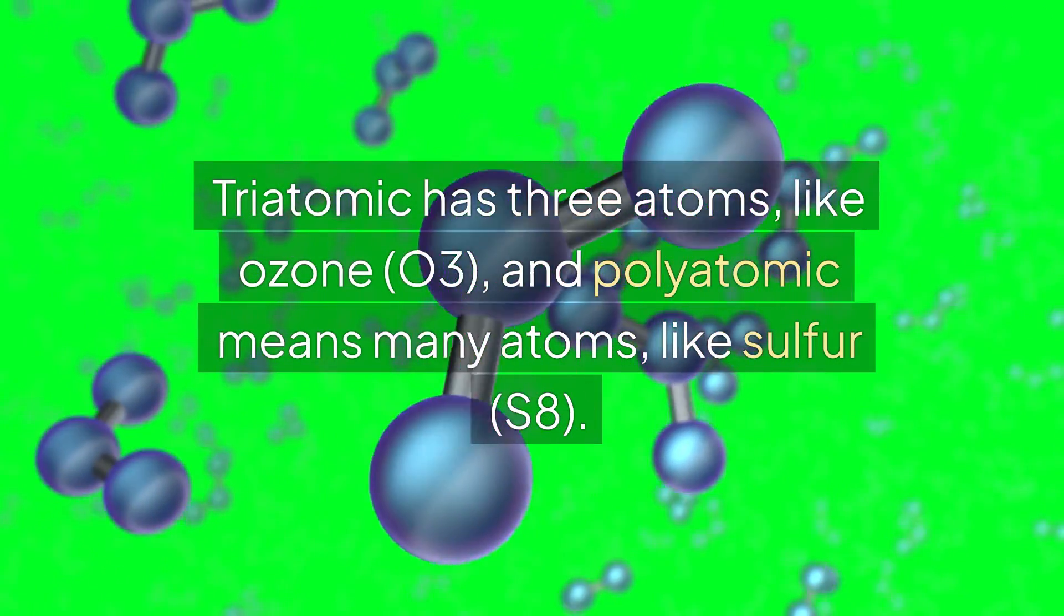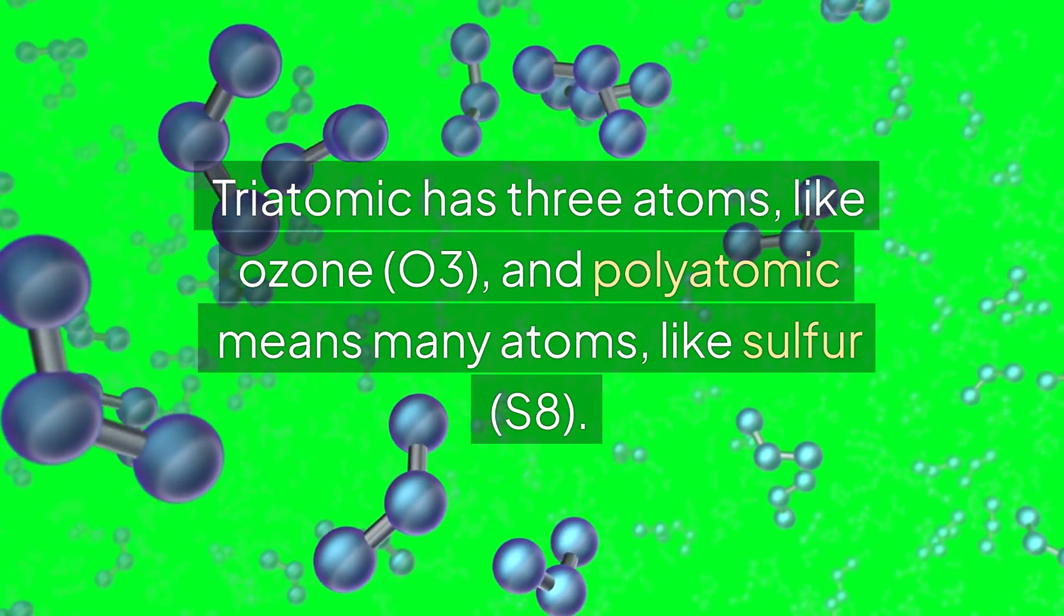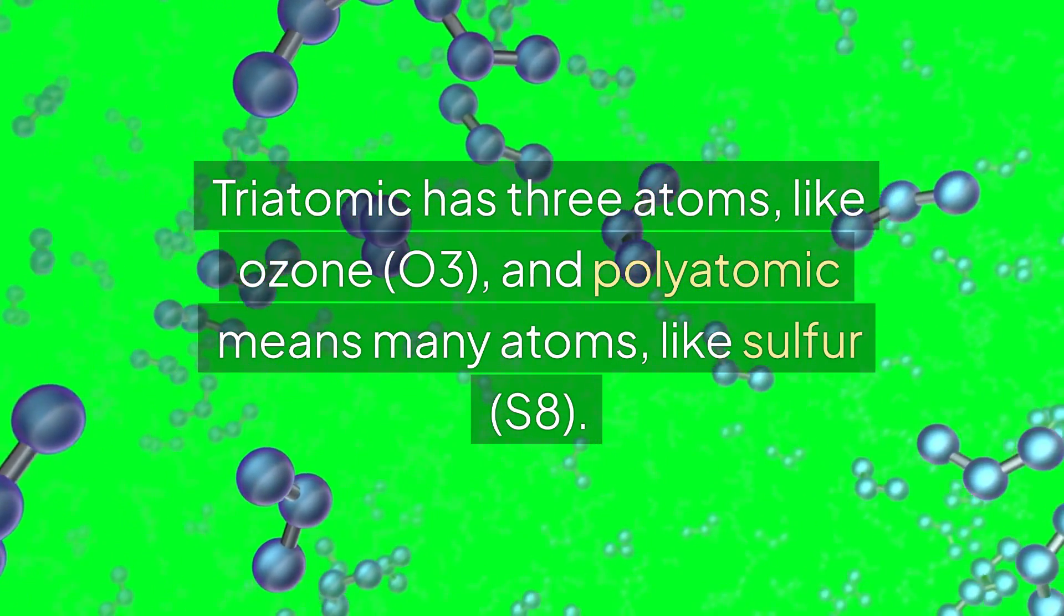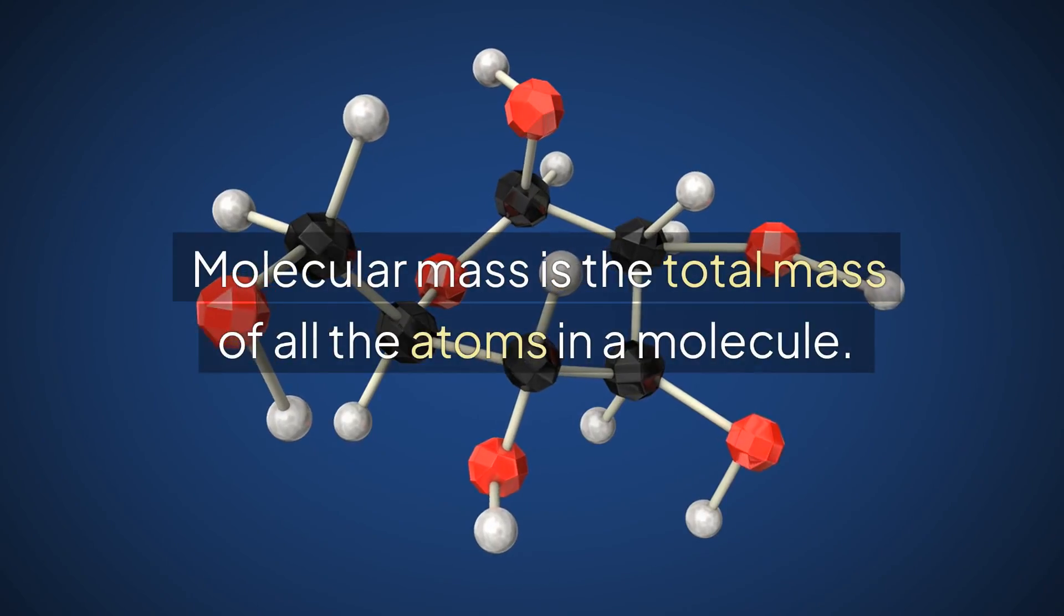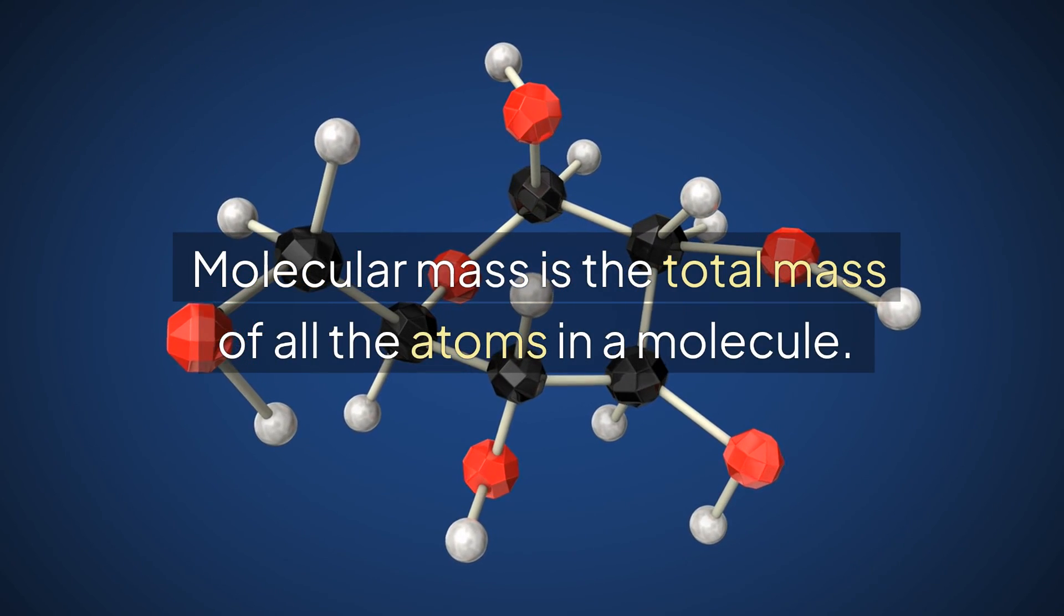Triatomic has three atoms, like ozone, O3, and polyatomic means many atoms, like sulfur, S8. Molecular mass is the total mass of all the atoms in a molecule.